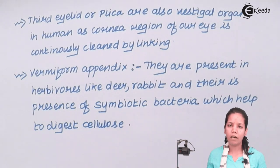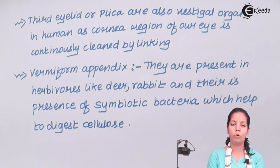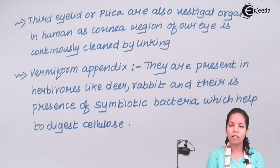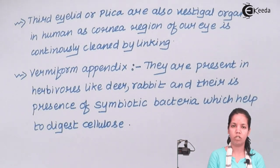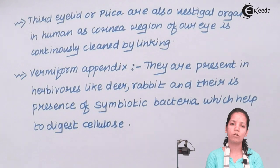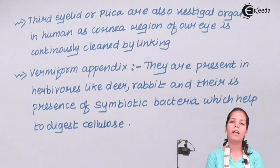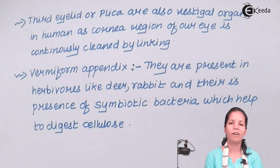Eventually in man, the vermiform appendix did not have any use. As we gained knowledge, we learned how to light a fire, we learned how to cook, and we were no more eating raw plants. We cooked them and consumed fruits and vegetables rather than eating raw cellulose. So students, in this part of the chapter what we understood was vestigial organs. I hope we are all very clear about this concept. Thank you!